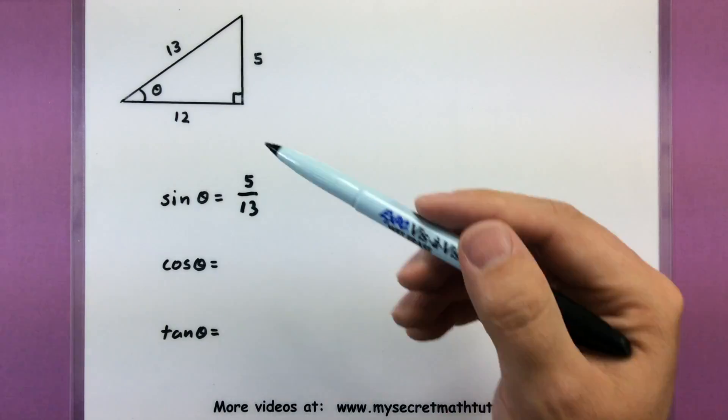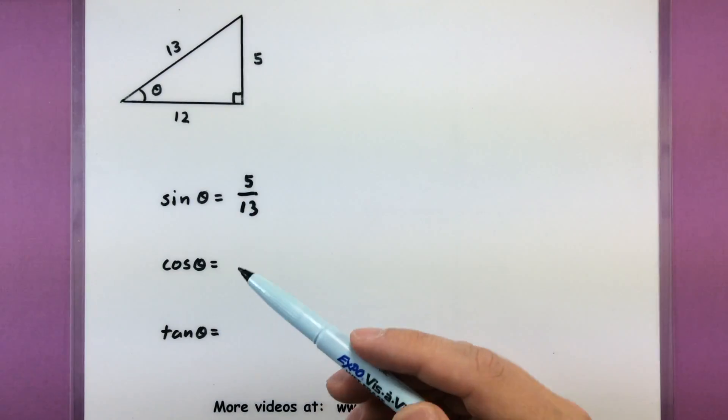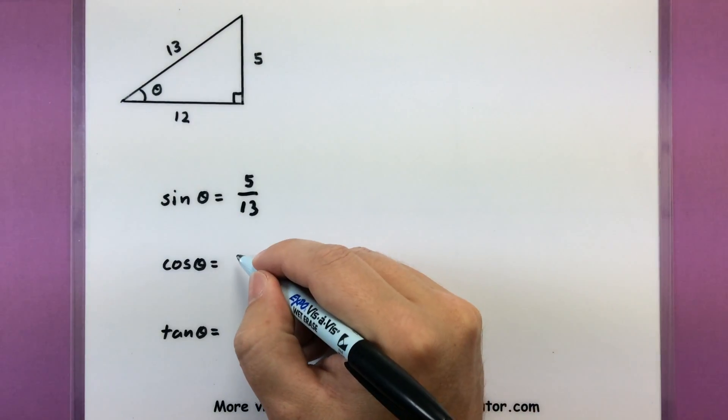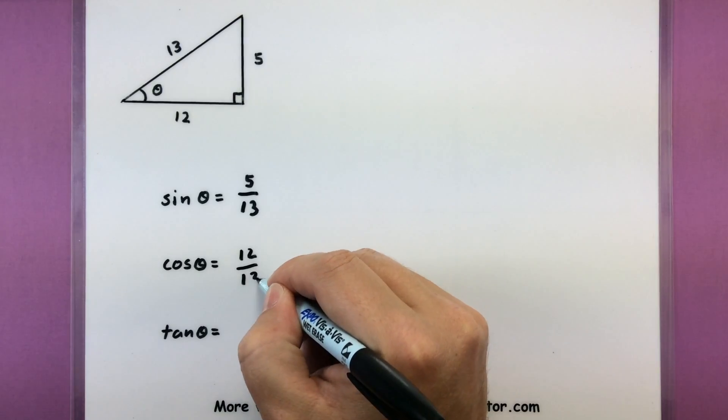Now moving on, for cosine, I'm thinking about that same angle, and now I'm thinking about the side that's adjacent to it, and putting that over thirteen. So twelve over thirteen.